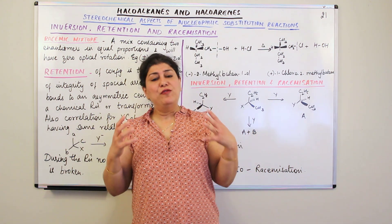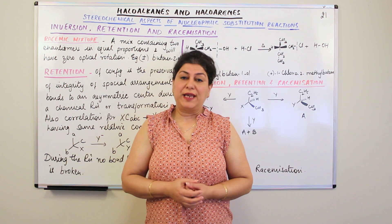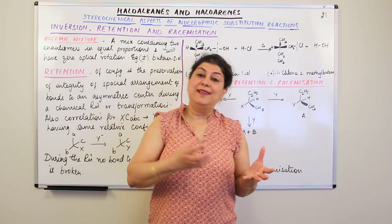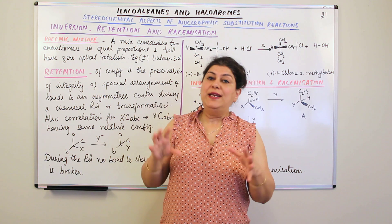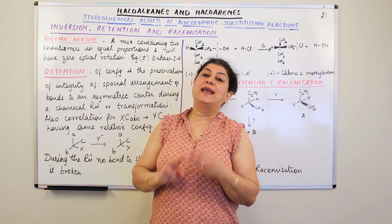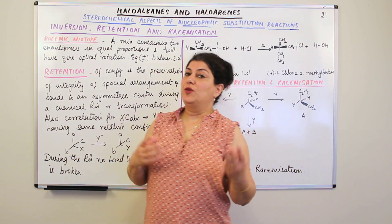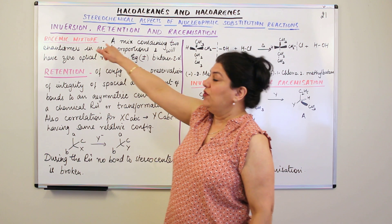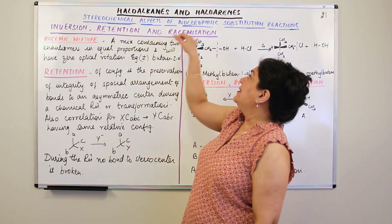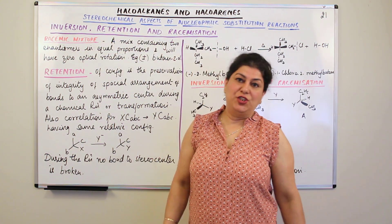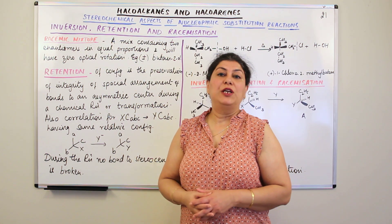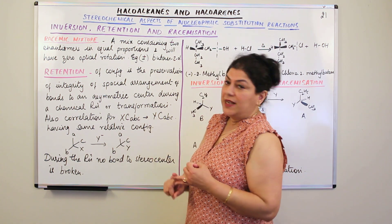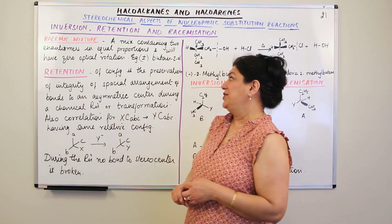Before we come to the SN1 and SN2 mechanisms, or to understand their stereochemical aspects, we need to understand three more stereochemical properties: inversion, retention, and racemization. So in this video, I'm going to tell you about inversion, retention, and racemization.